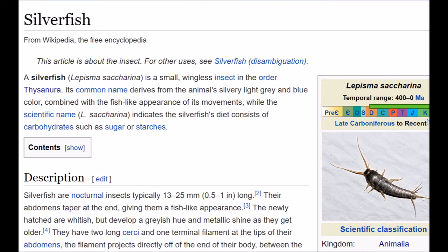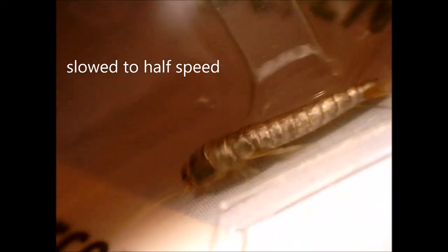According to Wikipedia, before silverfish reproduce, they carry out a ritual involving three phases which may last over half an hour. In the first phase, the male and female stand face to face, their trembling antennae touching, then repeatedly back off and return to this position.